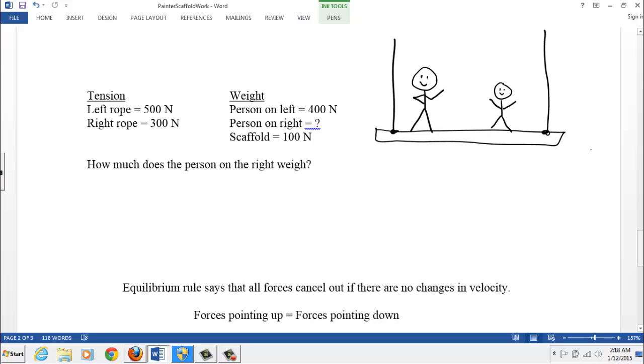All right, let's put some numbers to the whole thing. We've got the scaffold again, we got tension. I said the tension was 500 newtons on this rope and 300 newtons on this rope. Person on the left, he weighs 400 newtons, so that downward force. The person on the right, we don't know. Here's the problem, you want to know how much this guy on the right weighs.